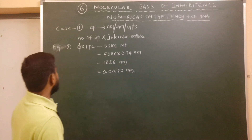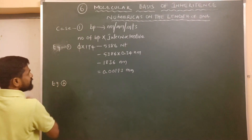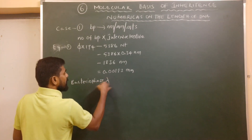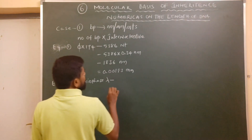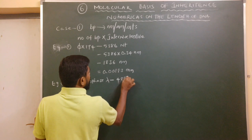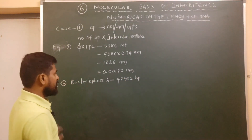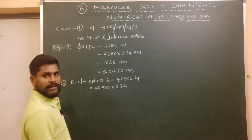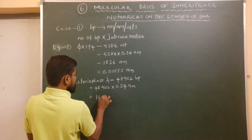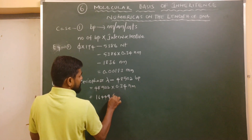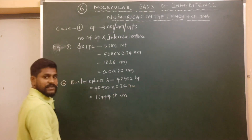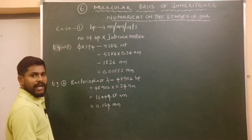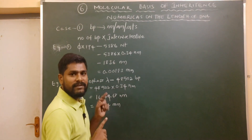The next example question 2 is Bacteriophage lambda. The length of Bacteriophage lambda DNA is 48502 base pairs. If you multiply these 48502 base pairs by 0.34 nanometers, you will get 16449.68 nanometers. If you convert these nanometers into millimeters, it will become 0.164 millimeters. As you know very well, 1 nanometer is a millionth part of a millimeter.